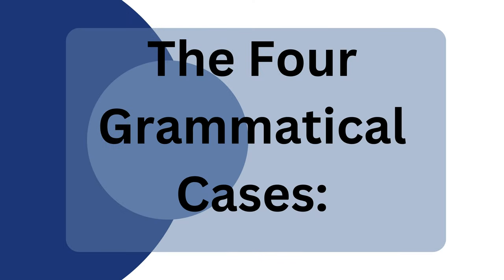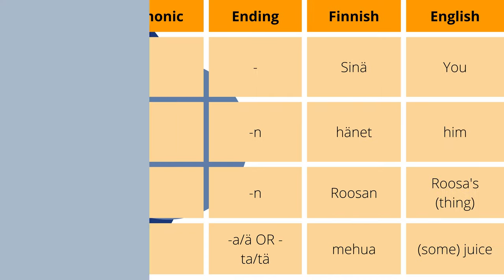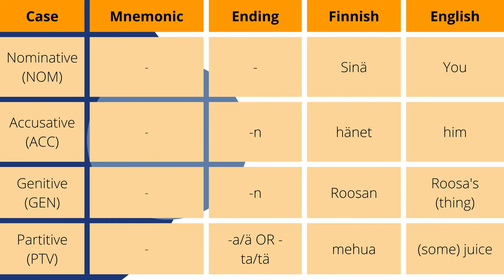Let's look at the four grammatical cases to start with. The four grammatical cases of Finnish are nominative, accusative, genitive, and partitive. The nominative case takes the function of the subject of the sentence. For example, sinä, meaning 'you.'